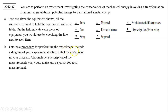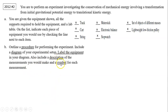Part B: outline a procedure for performing the experiment. You need to indicate a diagram of the experimental setup with labeled equipment in your diagram. Also include the description of the measurements you would make and a symbol for each of these measurements. Make sure you're including the description and the symbol of the measurement, and you need to label parts of your diagram.